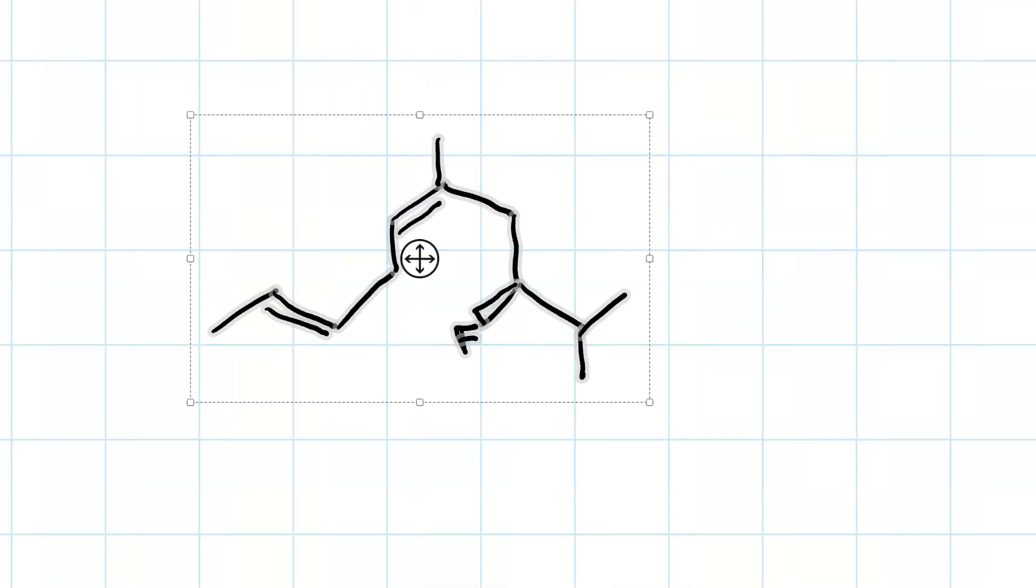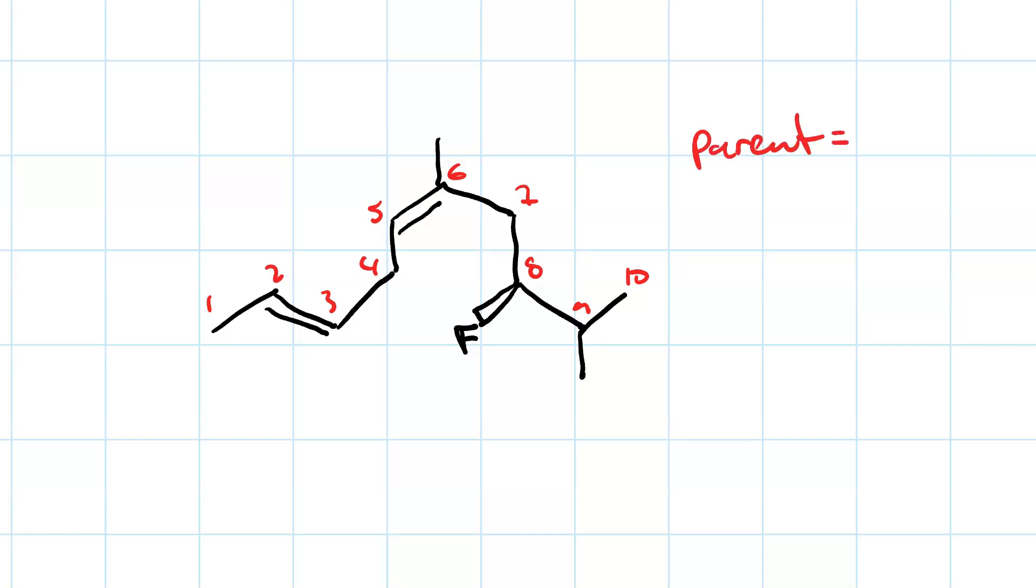Here we go. Now, it's pretty clear what our parent chain is. Ten carbons. Decane. But it's got two double bonds. Between carbons 2 and 3 and between carbons 5 and 6. And so our parent is 2,5-decadiene.